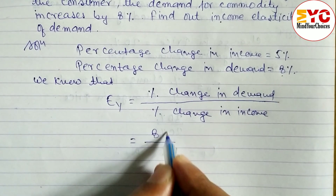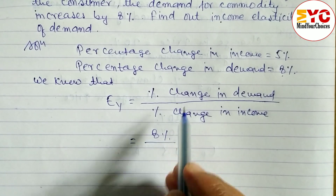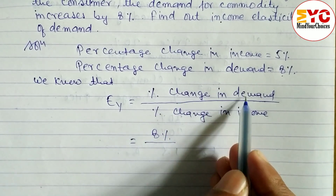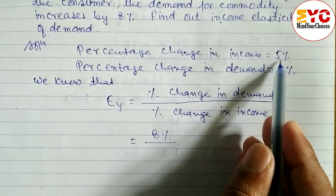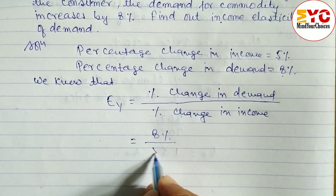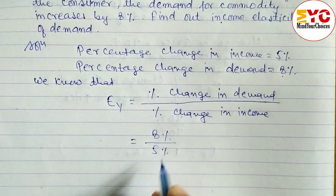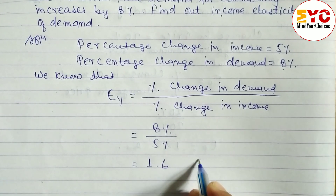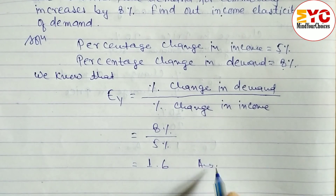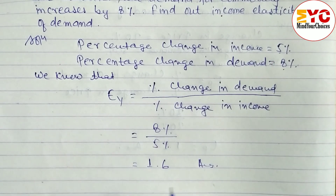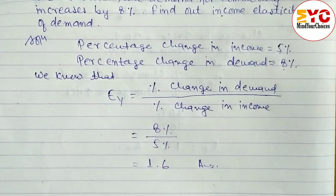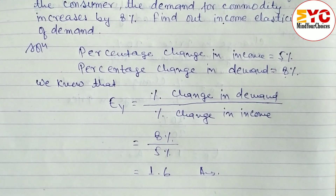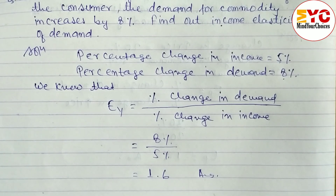Substituting the values: percentage change in demand is 8%, divided by percentage change in income which is 5%. When we divide these two, we get 1.6. So income elasticity of demand equals 1.6, which is the answer.